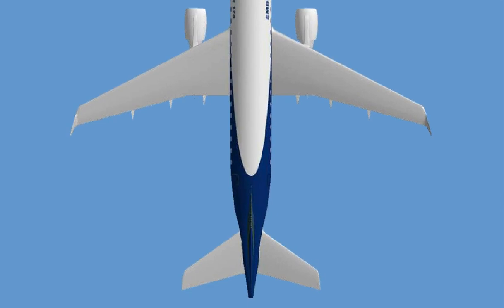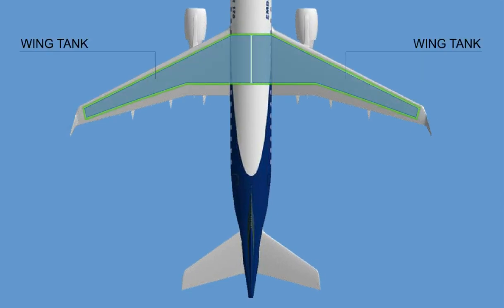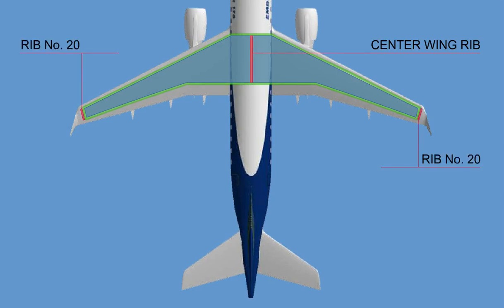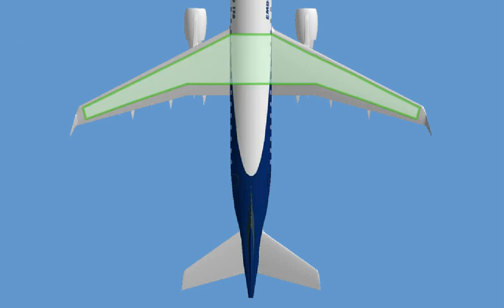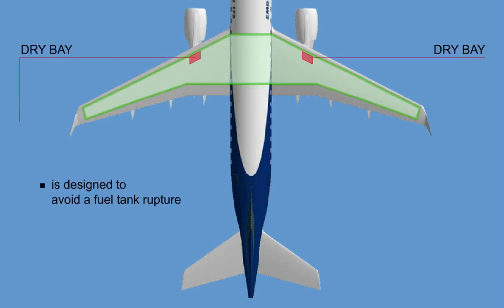The aircraft has two structurally integral wing tanks between the center wing rib and rib number 20. There is a dry bay area near the engine pylon, designed to avoid a fuel tank rupture in case of an uncontained engine rotor burst.